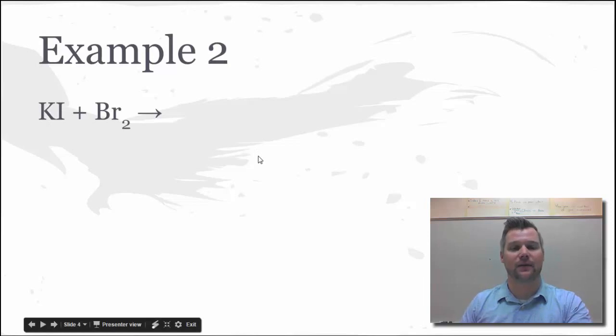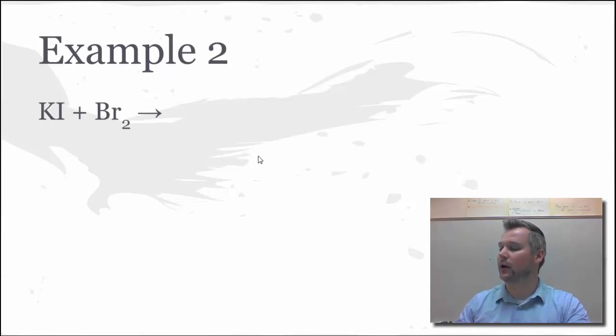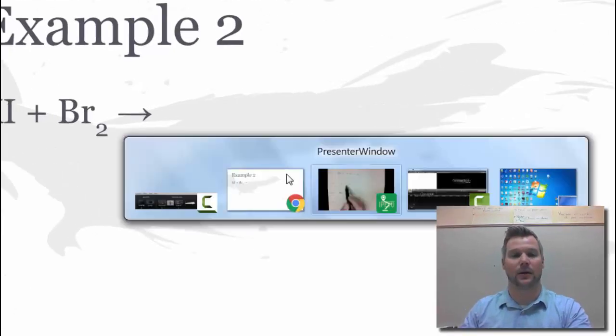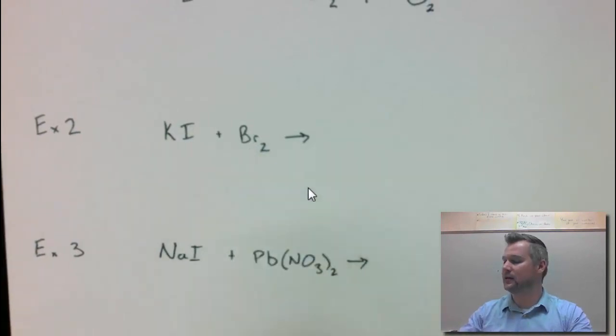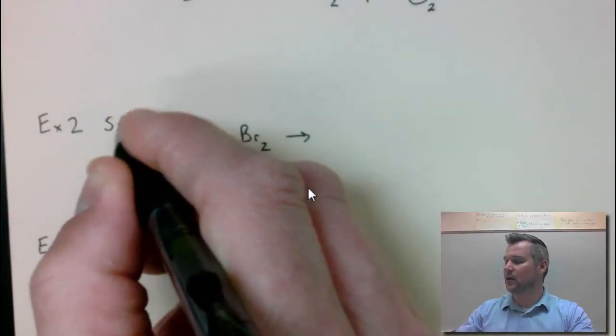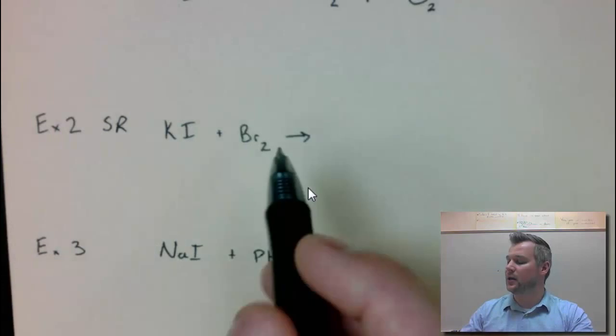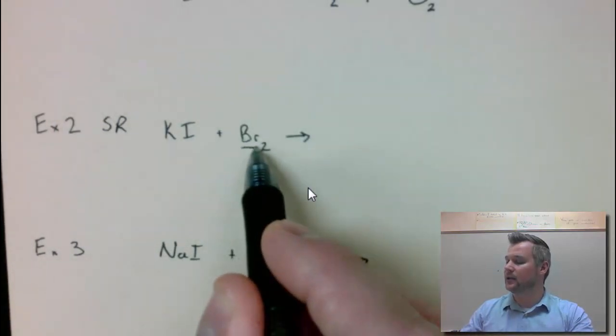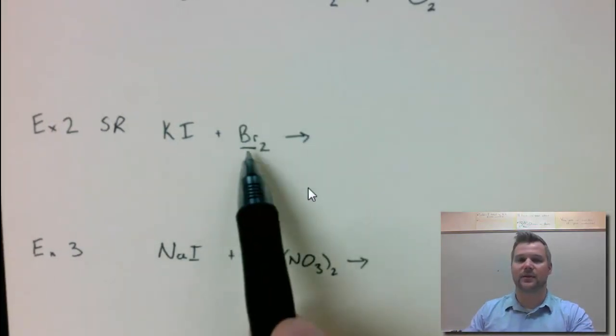The second problem, I have two reactants. I have one ionic compound and one element. If I went through my series of questions, I know it's not decomp, not combustion, not double replacement. It looks to be single replacement because I have an ionic with an element. The reaction pattern is find the element and see what it's going to replace. It's going to replace something similar to it.